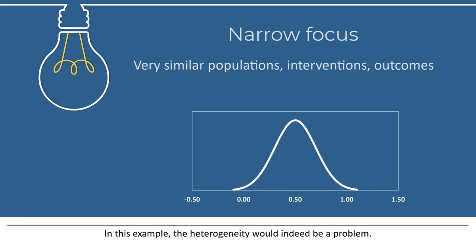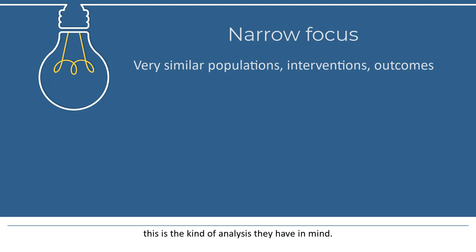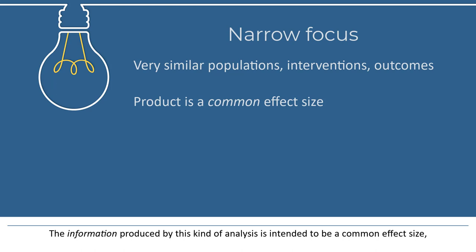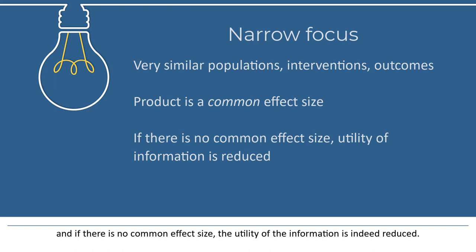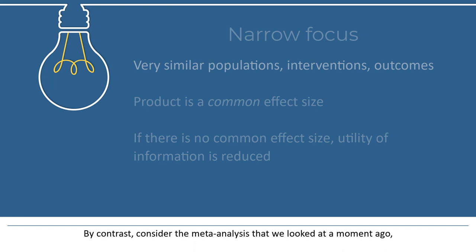Additionally, it seems unlikely that we will be able to identify any factors that might be associated with the heterogeneity, since we believe that all the studies are identical to each other on all relevant factors. In this example, the heterogeneity would indeed be a problem. When someone says that heterogeneity reduces the quality of information, this is the kind of analysis they have in mind — the information produced is intended to be a common effect size, and if there is no common effect size, the utility of the information is indeed reduced.